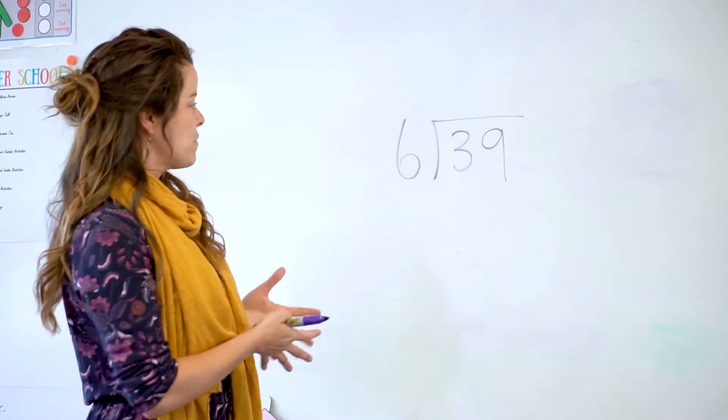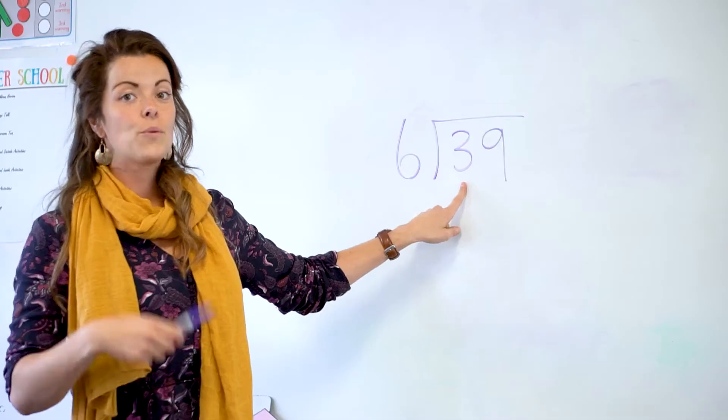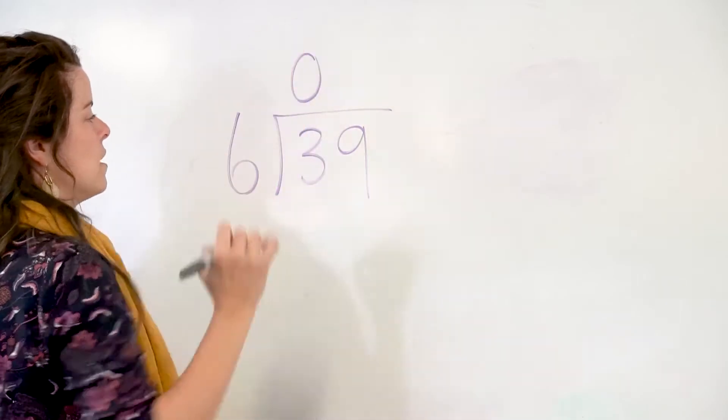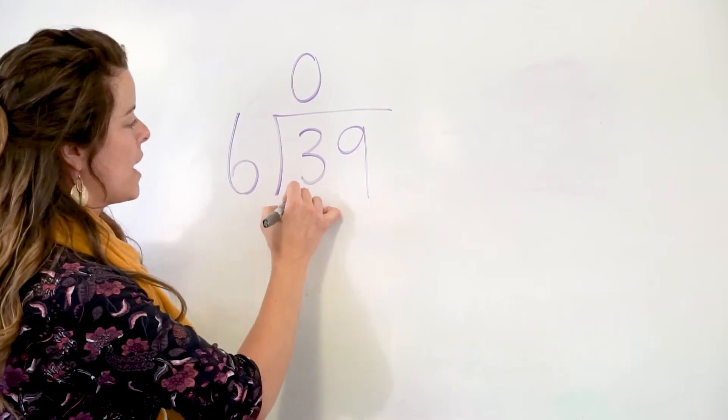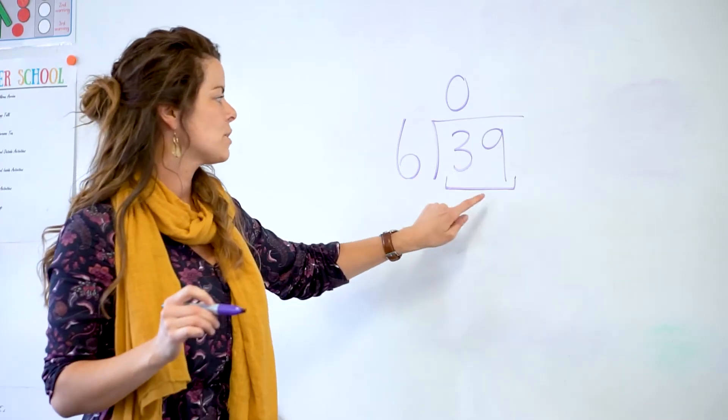Like the previous example, we'd be looking at how many times would 6 go into 3. Now we wouldn't be able to do that, so we pop a 0 up the top. So what we'd be looking at next is how many times - and I put my join in there, you don't have to do that - but how many times does 6 go into 39?